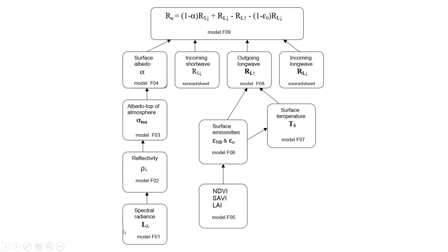This first part is the most important because it is also used for computing incoming shortwave radiation and outgoing longwave radiation. Prior to that, we need to compute vegetation indexes — NDVI, SAVI, and Leaf Area Index (model F05). From these vegetation indexes we compute surface emissivities for narrow band and broad band (model F03), and from these emissivities we compute surface temperature. Both are needed to compute outgoing longwave radiation. Finally, incoming longwave radiation is computed using its own formula.